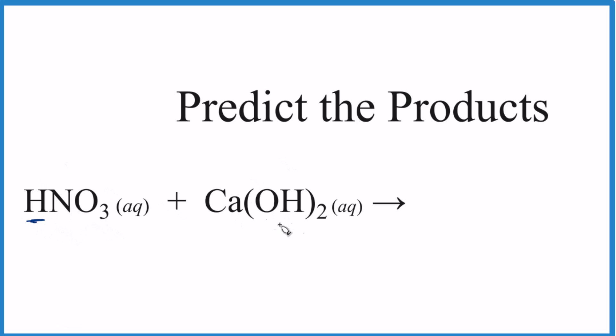And then a base—we have OH, the hydroxide ion, that's bonded to the metal here. So we have an acid and a base. This is going to be an acid-base reaction. It's also a double displacement reaction, so what's going to happen is the H and the calcium, they're going to switch places.